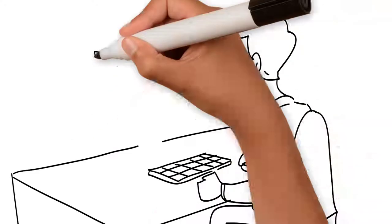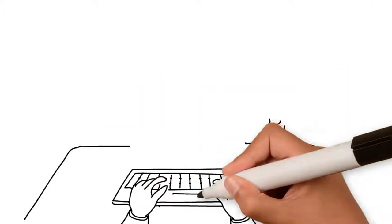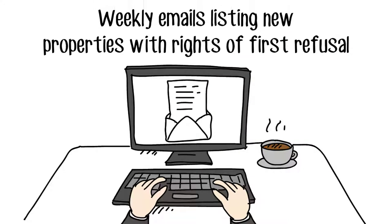Thomas is a smart guy. He's set up his own user profile on the portal and created a search that sends him weekly emails listing new properties with rights of first refusal.